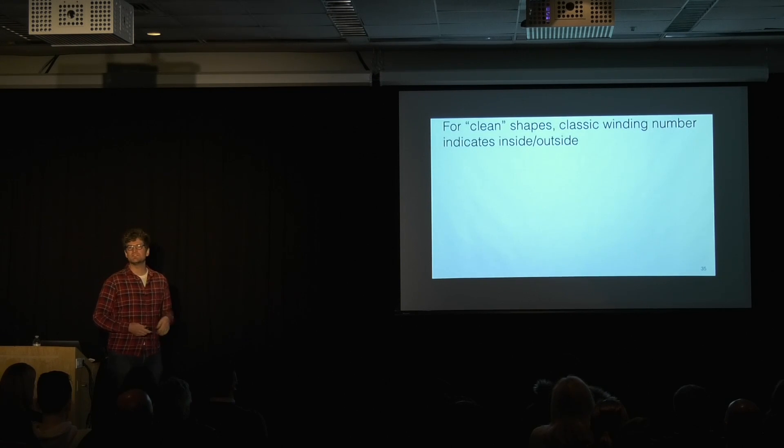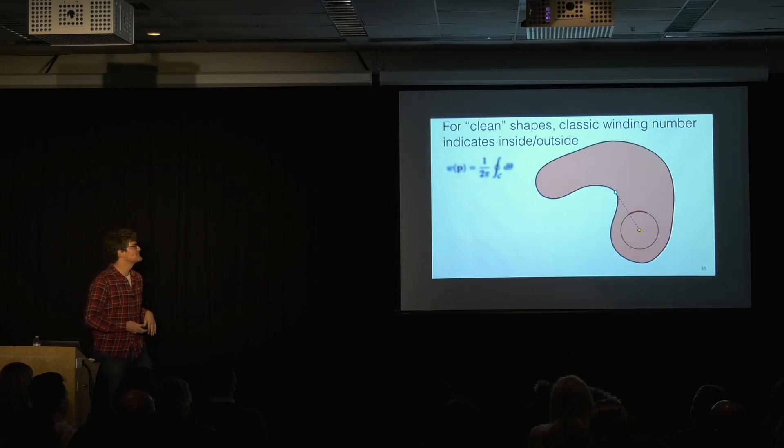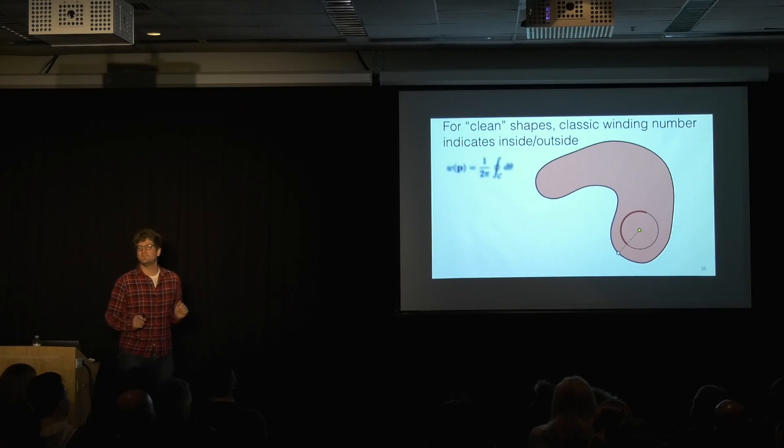Well, for clean shapes, there's a beautiful set of theory in mathematics called the winding number. And this indicates what's inside and what's outside. This is the formula for the winding number. Some people might be getting scared here. You're seeing some symbols, some Greek. Let's just make it blurry and forget about it for a second.